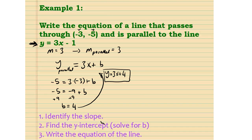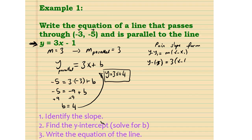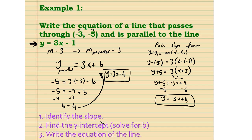We can also solve this using point-slope form. Our point-slope equation is y minus y1 equals m times x minus x1. Our slope is 3 and our point is negative 3, negative 5. So: y minus negative 5 equals 3 times x minus negative 3, which gives y plus 5 equals 3 times x plus 3. Applying the distributive property: y plus 5 equals 3x plus 9. Subtract 5: y equals 3x plus 4. We find the same equation either way — you can use slope-intercept form or point-slope form.